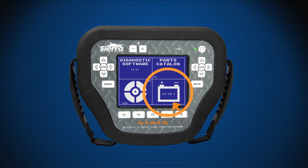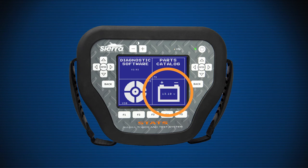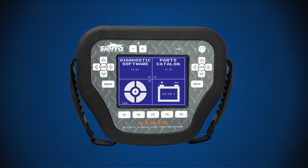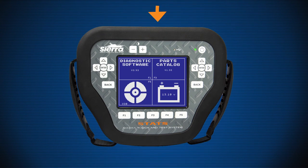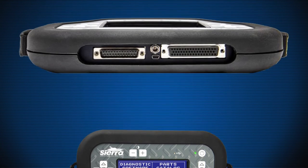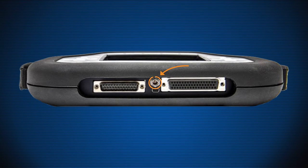The Battery tile displays the battery voltage of the engine, allowing the user to ensure proper battery voltage before proceeding with diagnostics. Note: the Battery tile is not a selectable function. Stats is equipped with four different ports: power supply port, USB port, 50-way D-type dongle port, and 25-way engine connection port.